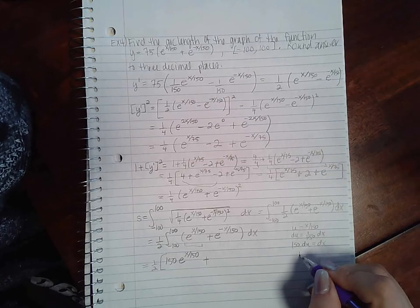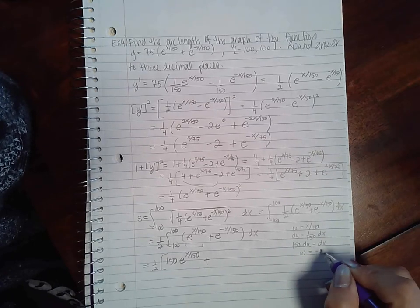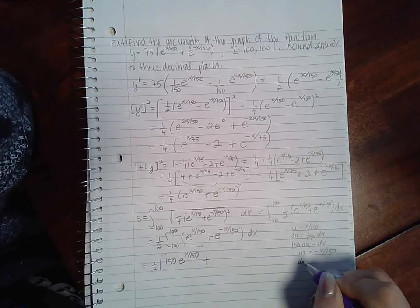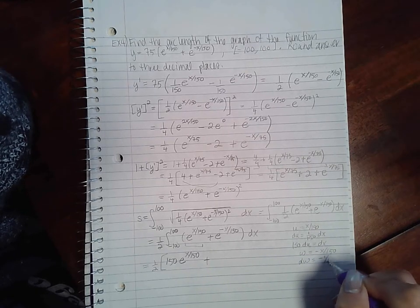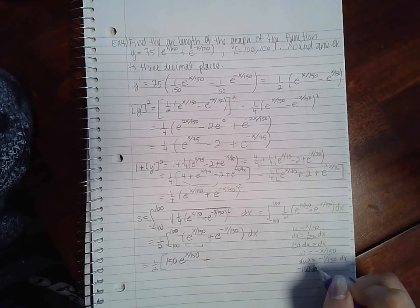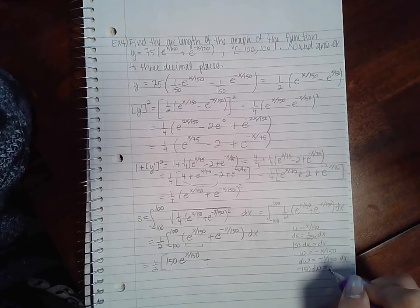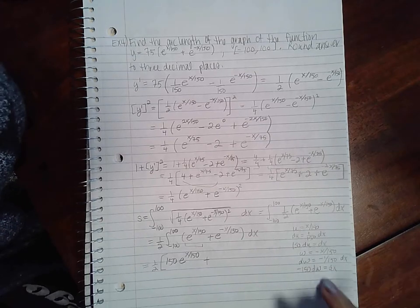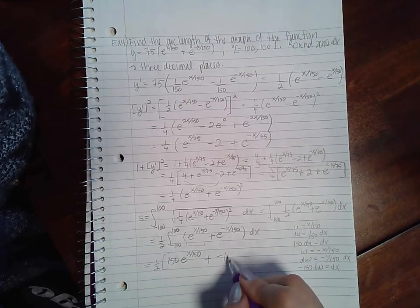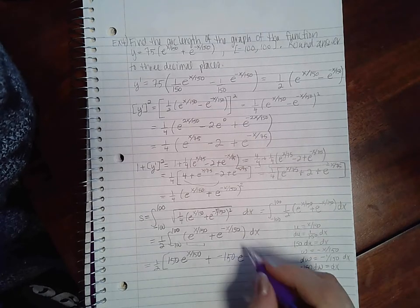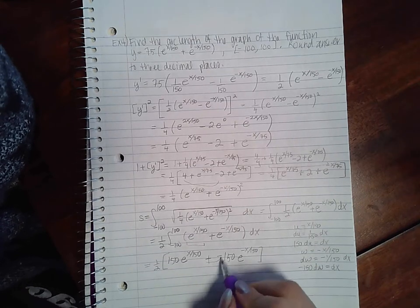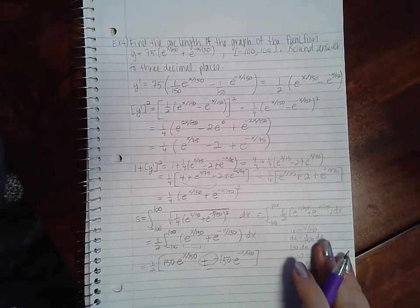And if I do the same thing I'm going to use a w with the negative x over 150. dw would be negative 1 over 150 dx, and then negative 150 dw would be dx. So I can substitute that in here. So I'll get negative 150 e to the w, which is negative x over 150. And you can combine these into just one big minus sign.